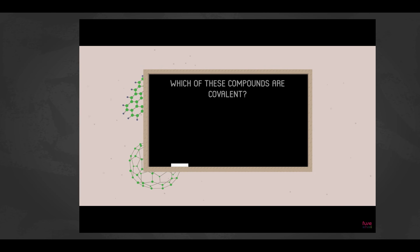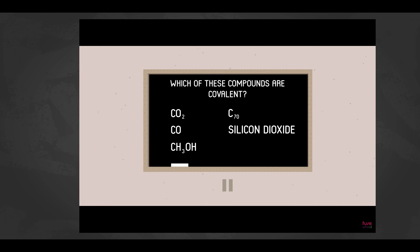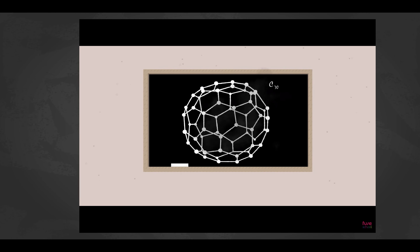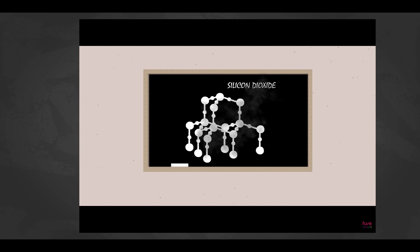Challenge: which of these compounds are covalent? The answer is all of them — carbon dioxide, carbon monoxide, and methanol are all small molecules. Organic molecules form covalent bonds between hydrogen and carbon. C70 is a fullerene, a carbon molecule shaped like a rugby ball. Silicon dioxide is a giant covalent structure, like diamond but with oxygen atoms bridging between four-coordinate silicon atoms.